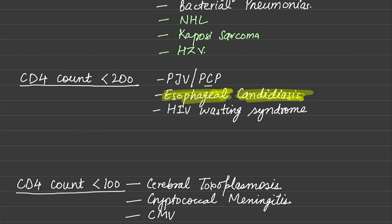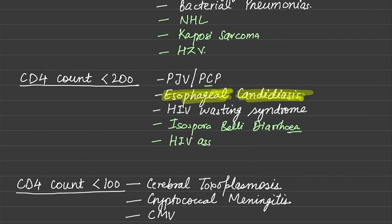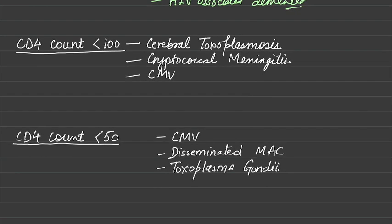The third is HIV wasting syndrome, in which there is more than 10% loss of body weight in HIV-affected individuals. Other important infections to memorize are Isospora belli, notorious for causing chronic diarrhea, and HIV-associated dementia, which is also very important.